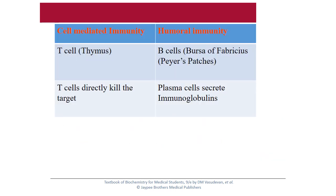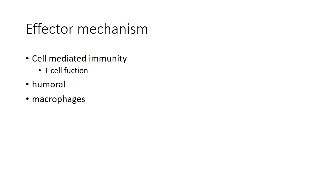There are two types of immunity: cell-mediated immunity and humoral immunity. Cell-mediated immunity is mediated by T cells secreted from the thymus gland — T cells directly kill the target cells. In humoral immunity, B cells are derived from the Bursa of Fabricius in avians, and plasma cells secrete the immunoglobulins that kill the target cells. Effector mechanisms are mediated by cell-mediated immunity via T cells, humoral immunity, and macrophages.